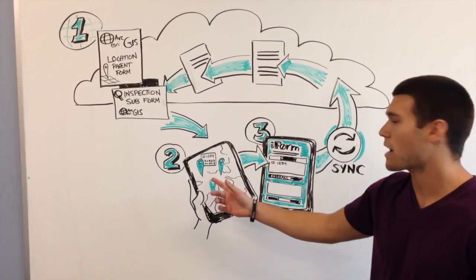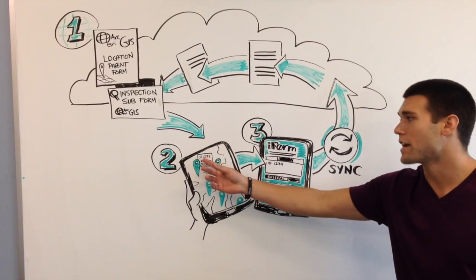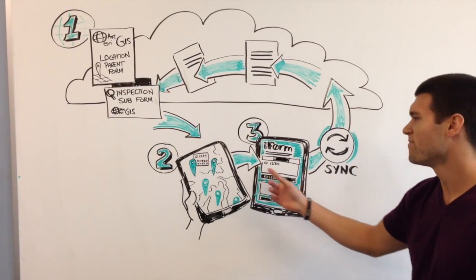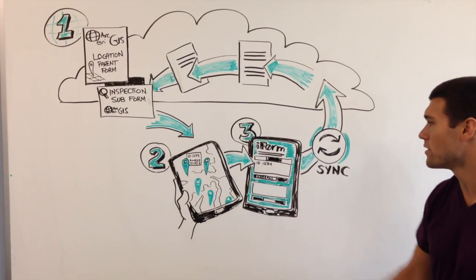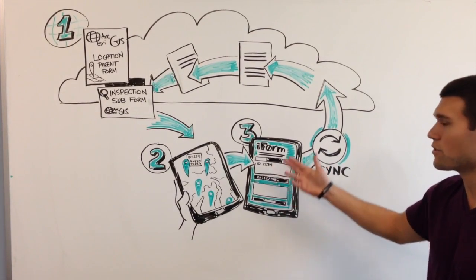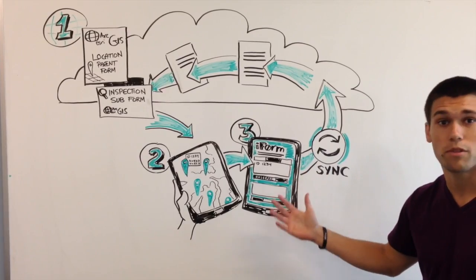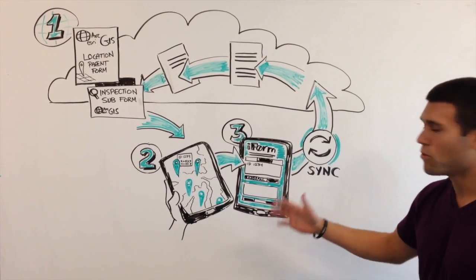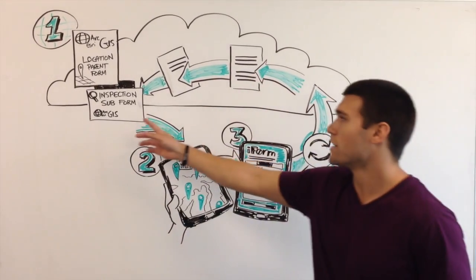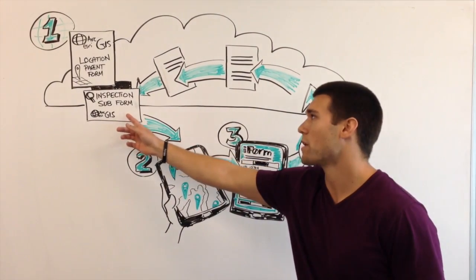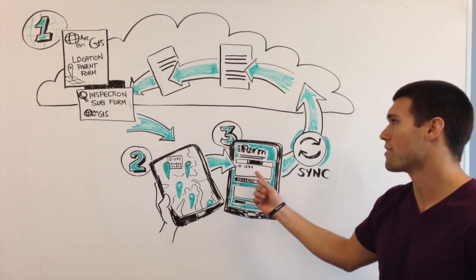From the ESRI application, we're actually calling iForm Builder in step three. We're passing the unique identifier for this point — ID 1234 — across into the iForm application. People will then use all of our advanced forms, related tables, all the JavaScript, GIS logic to capture all the data. Once they submit this record, it automatically goes up into the cloud and pushes data directly into the inspection sub, related through ID 1234.